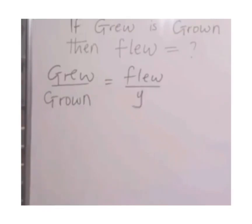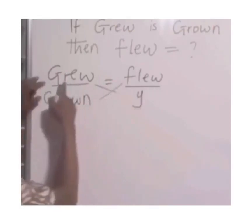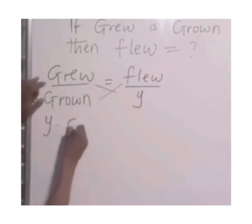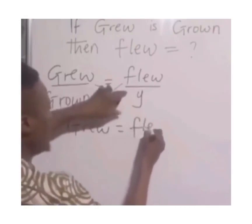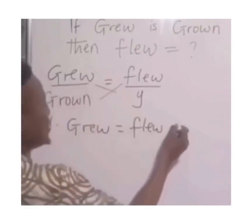Then cross multiply: y times grew equals flew times grown. That is cross multiply.